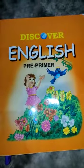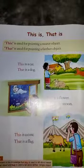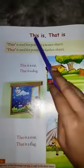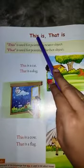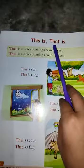Assalamu alaikum children. Today's subject is English. In English we will learn about this and that. This means hota hai yeh. That means hota hai wo.